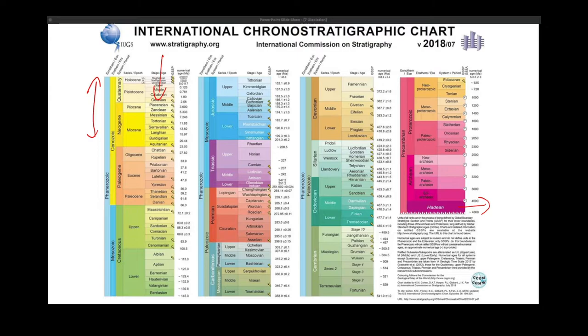This geologic time scale is arbitrary in the sense that it is divided not by the length of that period, but by significant events that occurred in the history of the Earth — for example, when did a mass extinction happen, like the one during the Permian, the glacial cycles, or when did the first angiosperms emerge. These are used to demarcate the boundaries of our geological time scale.